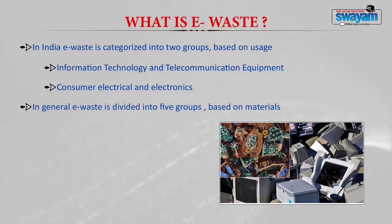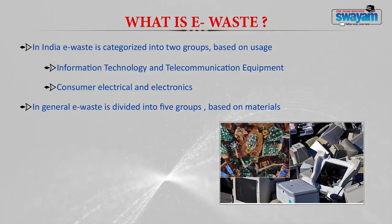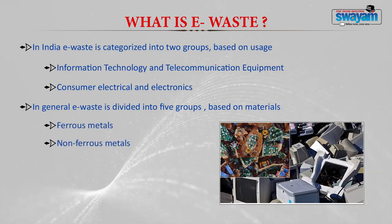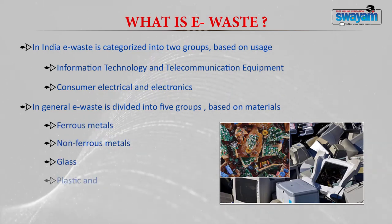In general, e-waste is divided into five groups based on material: ferrous metals, non-ferrous metals, glass, plastic, and others. Iron and steel occupies a major proportion of 48%, followed by plastic at 21%, and non-ferrous metals including precious metals at 13%, of which copper alone is 7%.